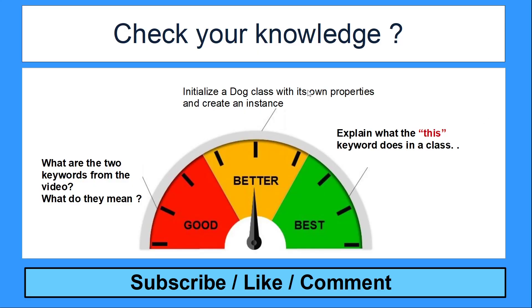Okay, so as always, we've got three questions that allow you to check your knowledge. So the first one, if you're able to answer this question, I think you've covered all the important information in the video. If you're able to initialize a dog class and then create an instance of that class, then I think you've got a better understanding of how it works. If you're able to explain what this keyword does, that's brilliant.